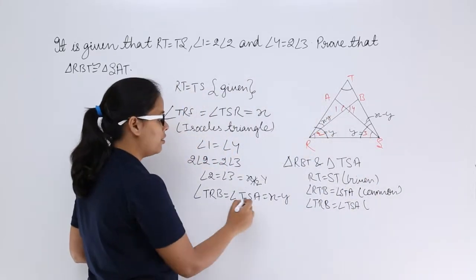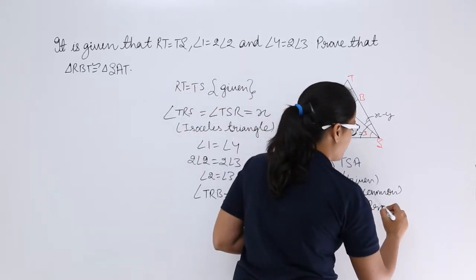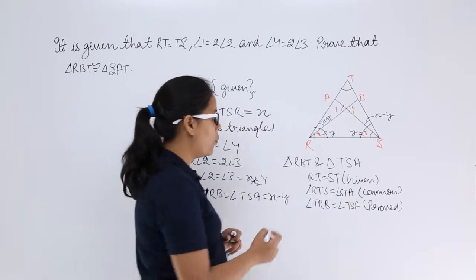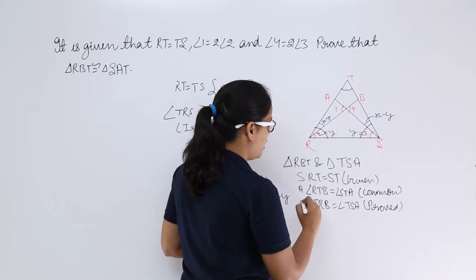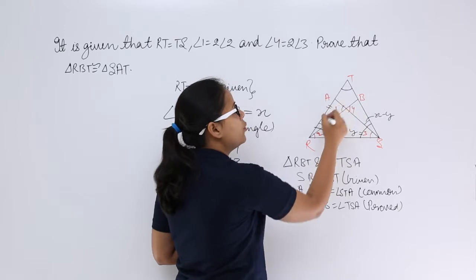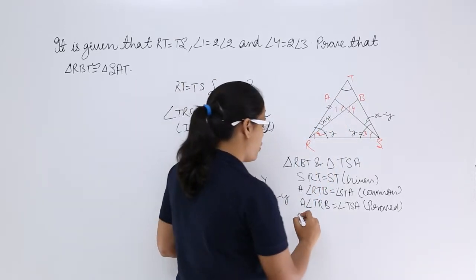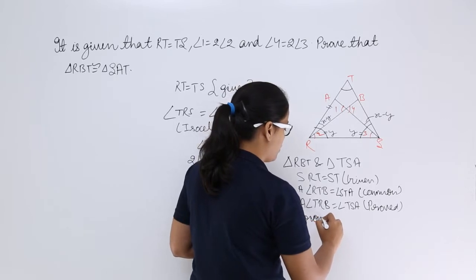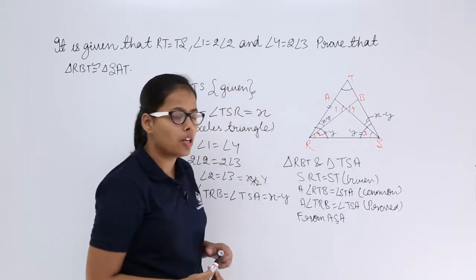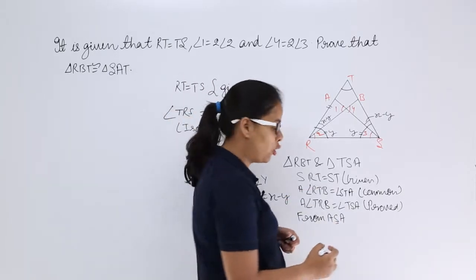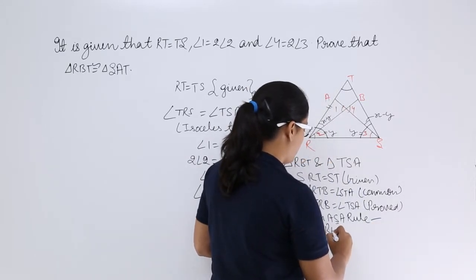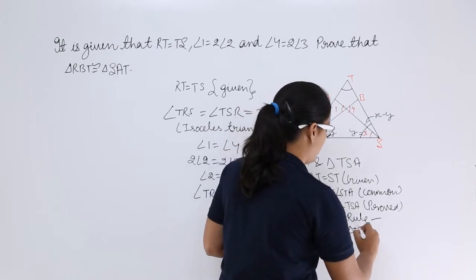So this we have proved — this angle equals this angle. From these three conditions: one side and two angles. The side is included between the two angles, so from the ASA rule — angle side angle rule — because the side is included between the two angles, these two triangles are congruent. From ASA rule, triangle RBT is congruent to triangle TSA.